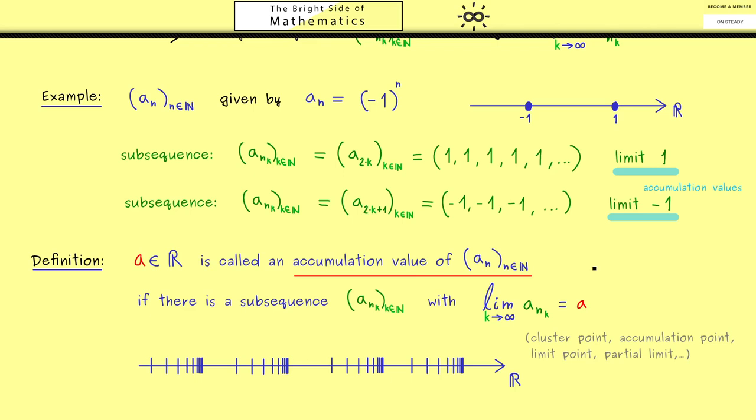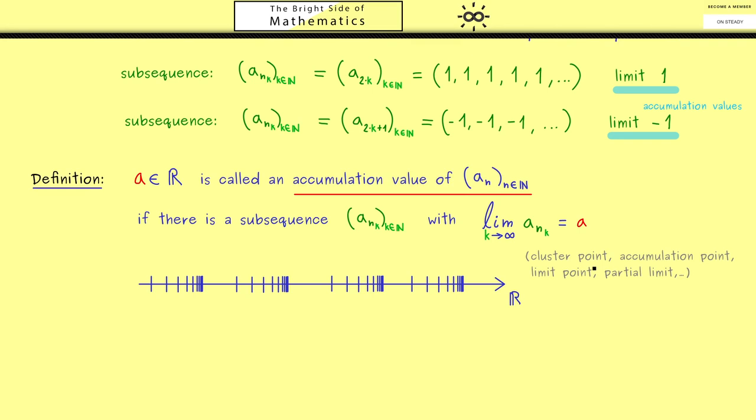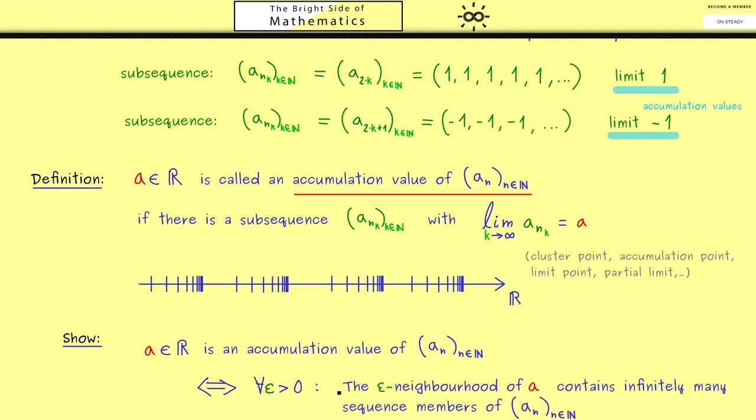For the end of this video I give you an alternative definition of accumulation value. Or to put it in other words, a is an accumulation value of the sequence an if and only if for all epsilon greater than 0 we have that the epsilon neighborhood of a contains infinitely many sequence members of our given sequence an. Of course this description fits perfectly with our name accumulation or cluster. Now this statement is not so hard to show. You only have to recall that the epsilon neighborhood of a is given by the interval a minus epsilon to a plus epsilon. Then in the next video we will talk more about accumulation values and also talk about the Bolzano-Weierstrass theorem.